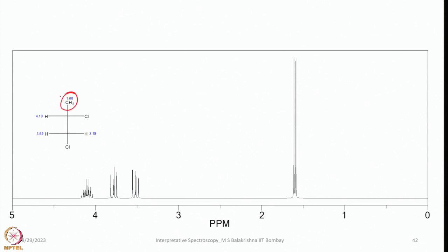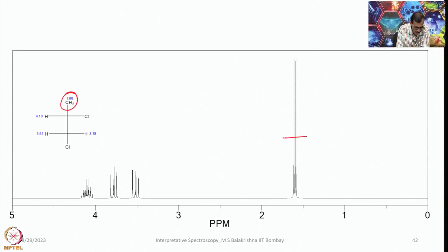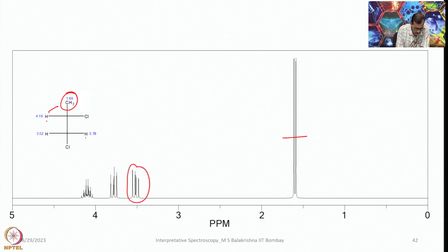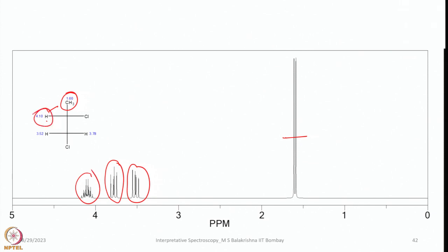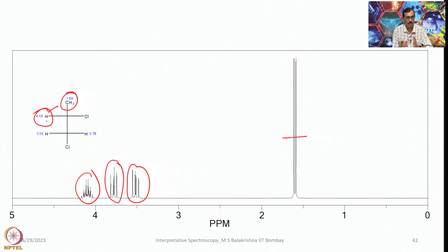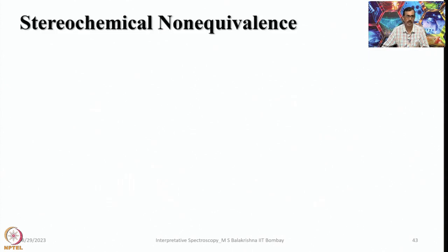Let us look at another example where chemical shift values are given: a doublet at 1.63 (coupled to an adjacent proton), signals at 3.52, 3.78, and 4.10. You should be able to identify the number of lines and the couplings involved from these signals. Try to work out the coupling pattern yourself.